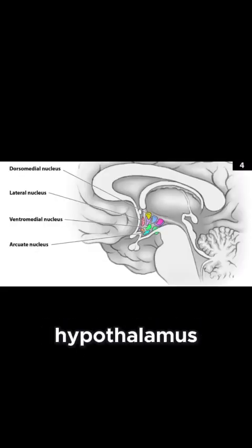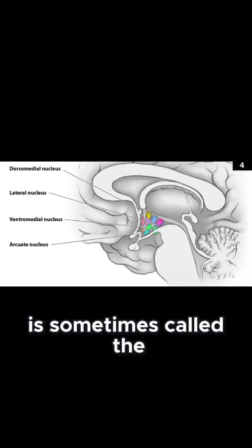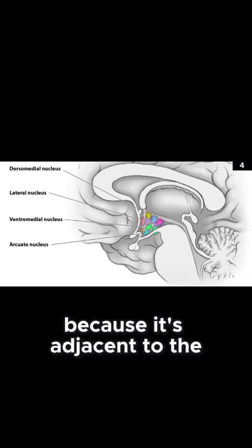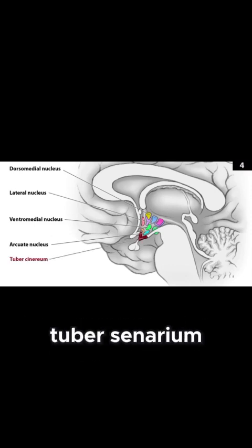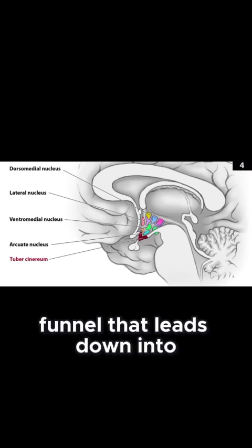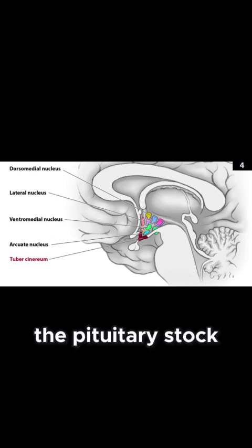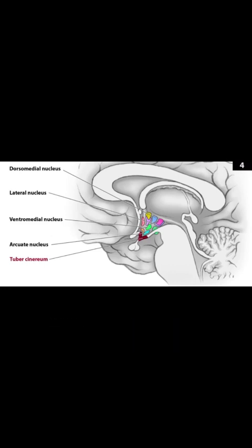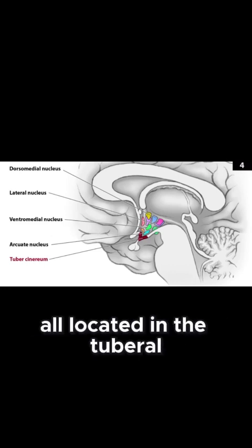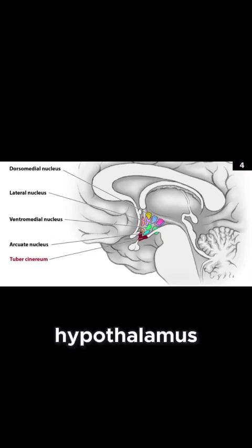The middle of the hypothalamus is sometimes called the tuberal hypothalamus because it's adjacent to the tuber cinereum, which is the little hollow funnel that leads down into the pituitary stalk. The next four nuclei are all located in the tuberal hypothalamus.